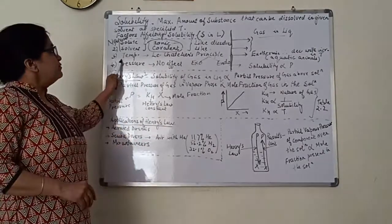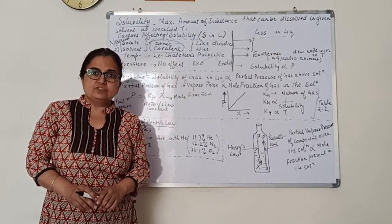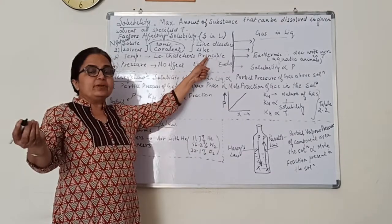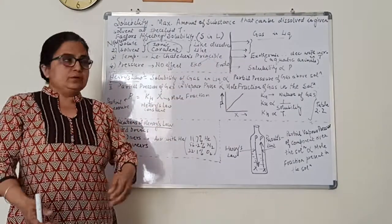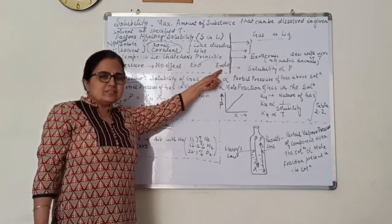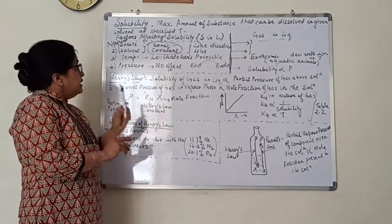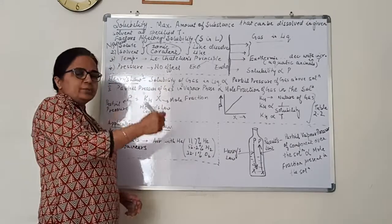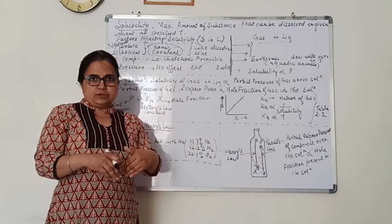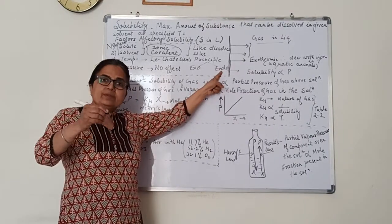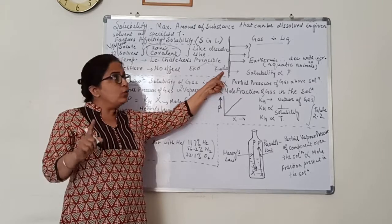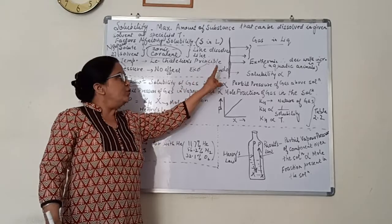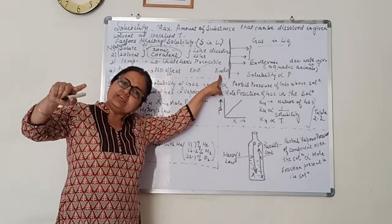The third factor is temperature, which is related to Le Chatelier's principle from chemical equilibrium. For exothermic substances — when the compound dissolves in water and liberates heat — solubility is greater at lower temperatures, and decreases with increasing temperature. For endothermic substances, solubility increases with increase in temperature.